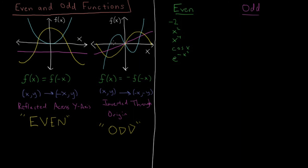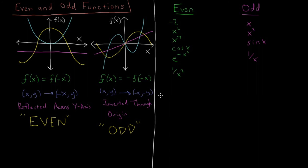Some odd functions: a linear polynomial through the origin, like x, is odd — if y = x, then y = -(-x), which checks out. x³ is also odd. Sine of x is an odd function. And 1/x would also be odd, while 1/x² would be even — you can check those for yourself.